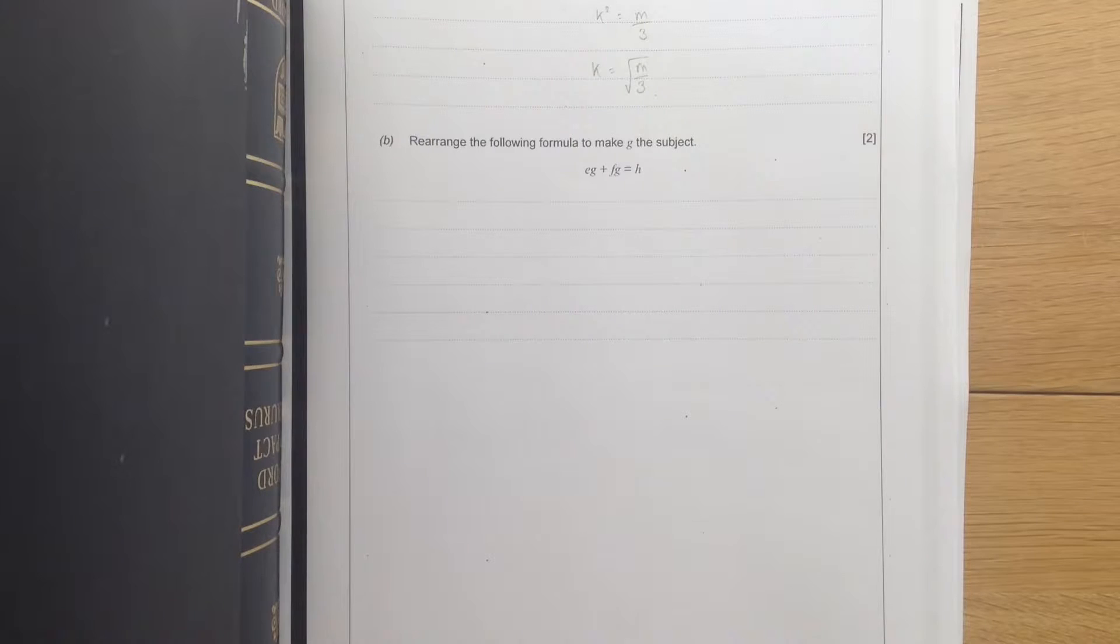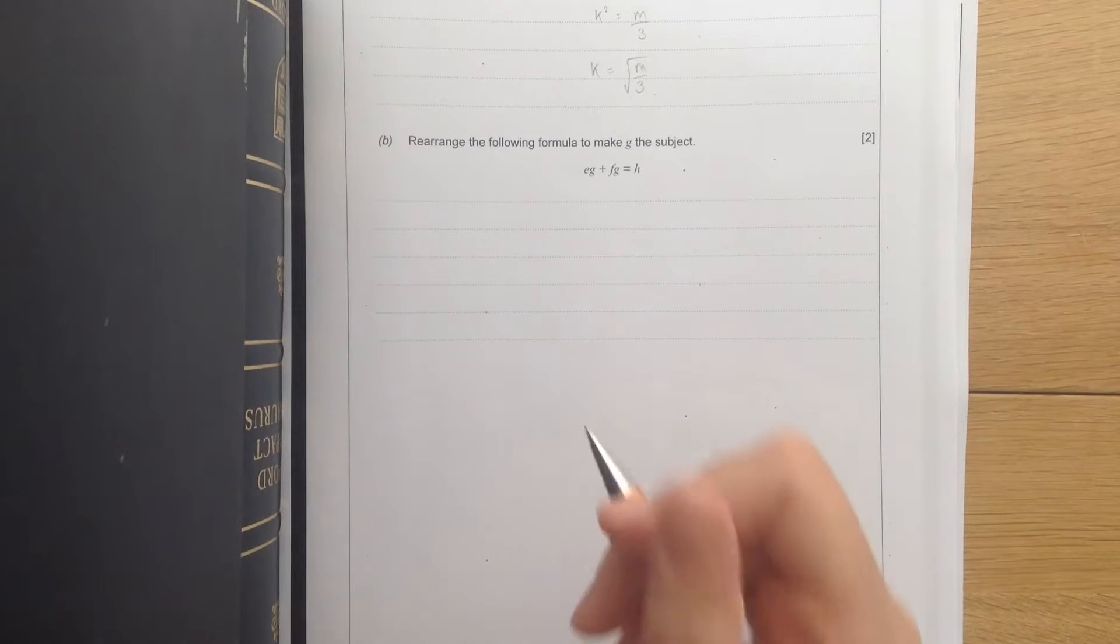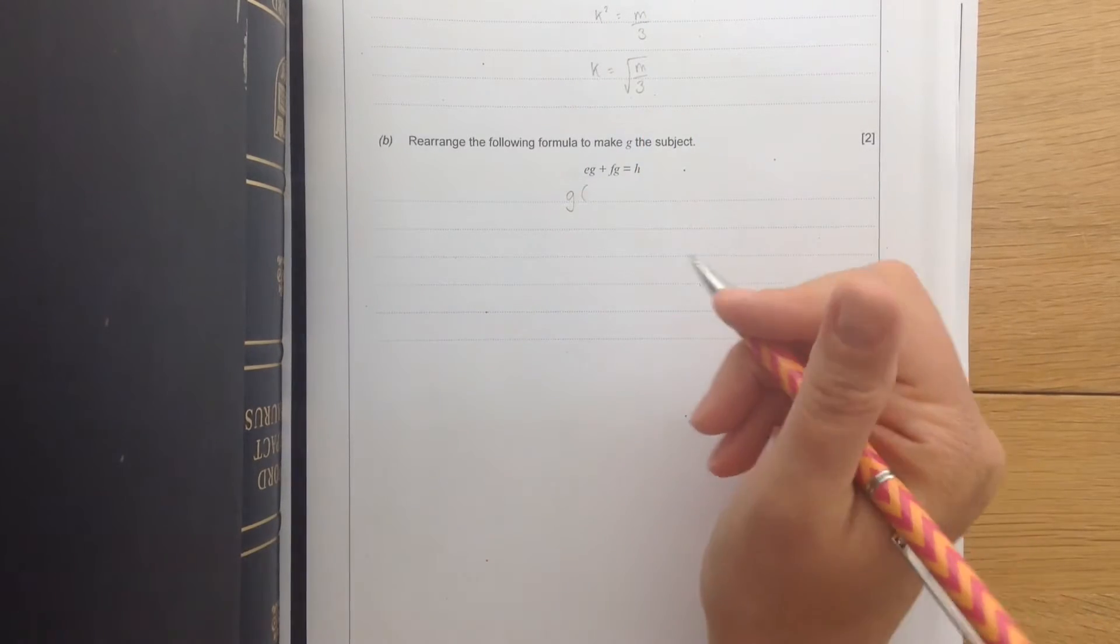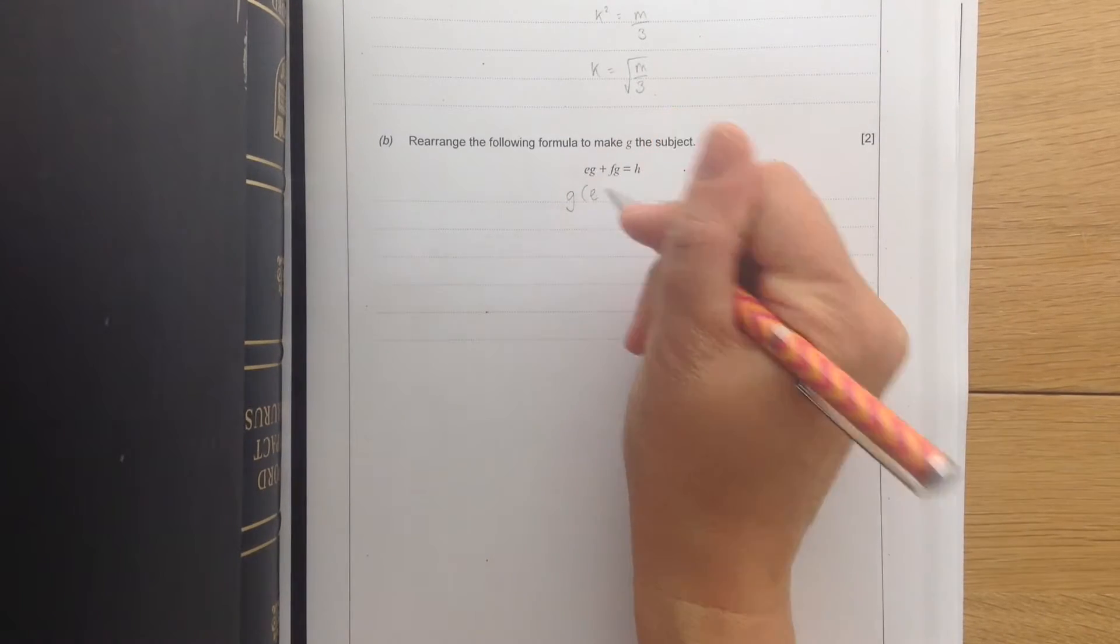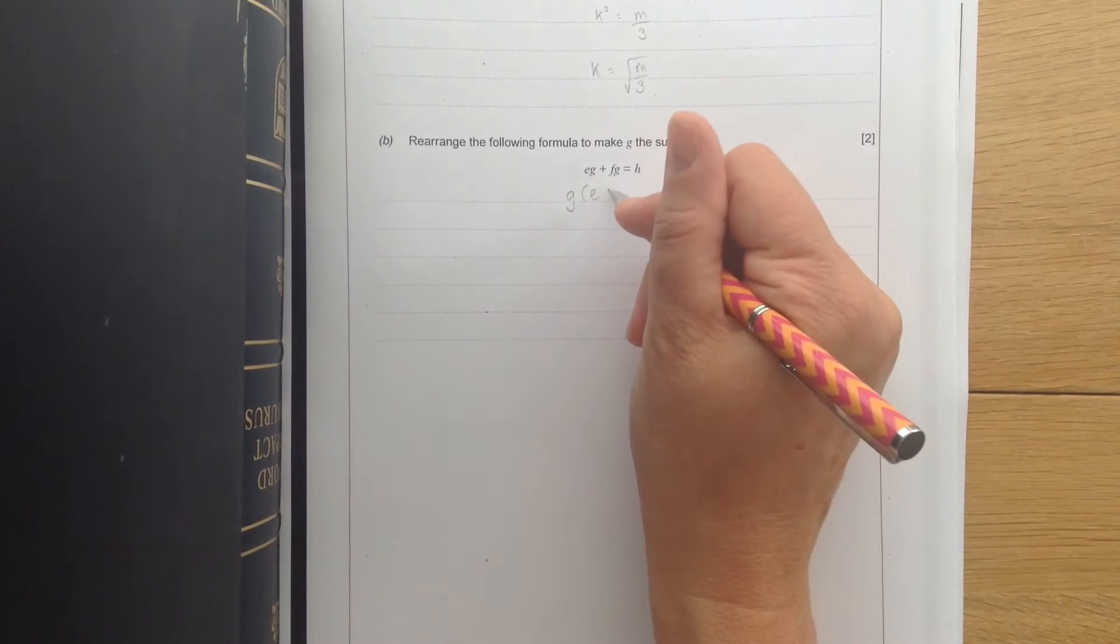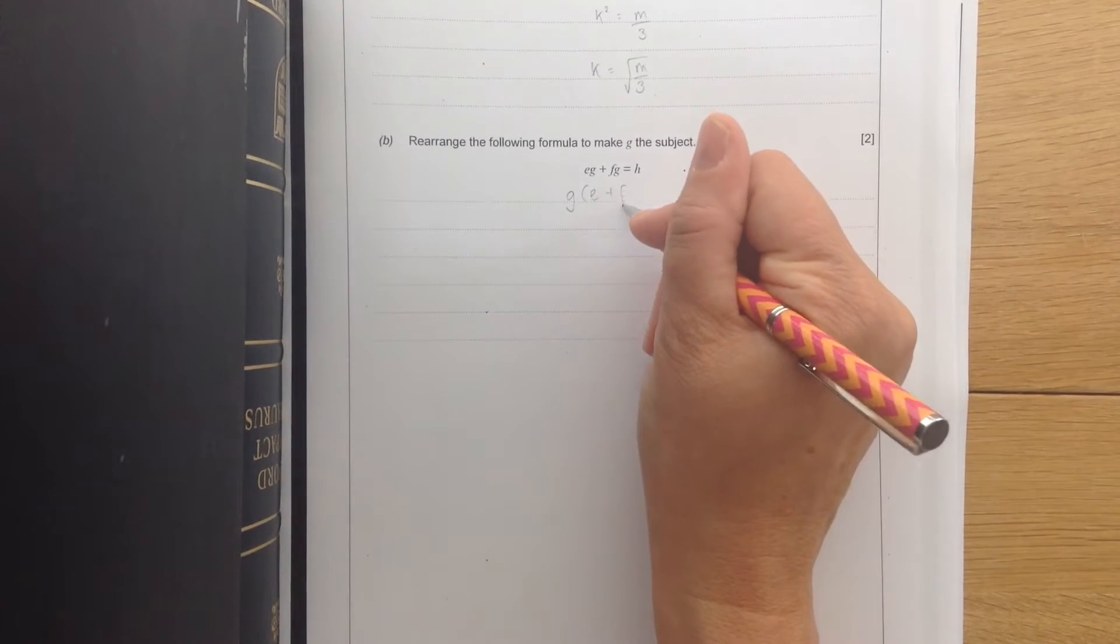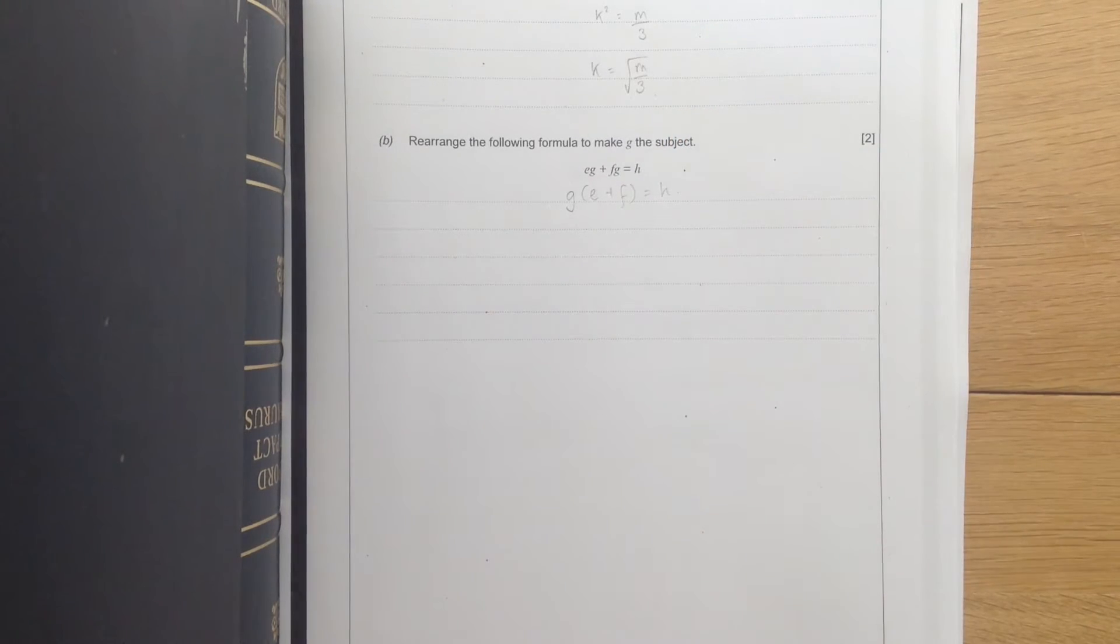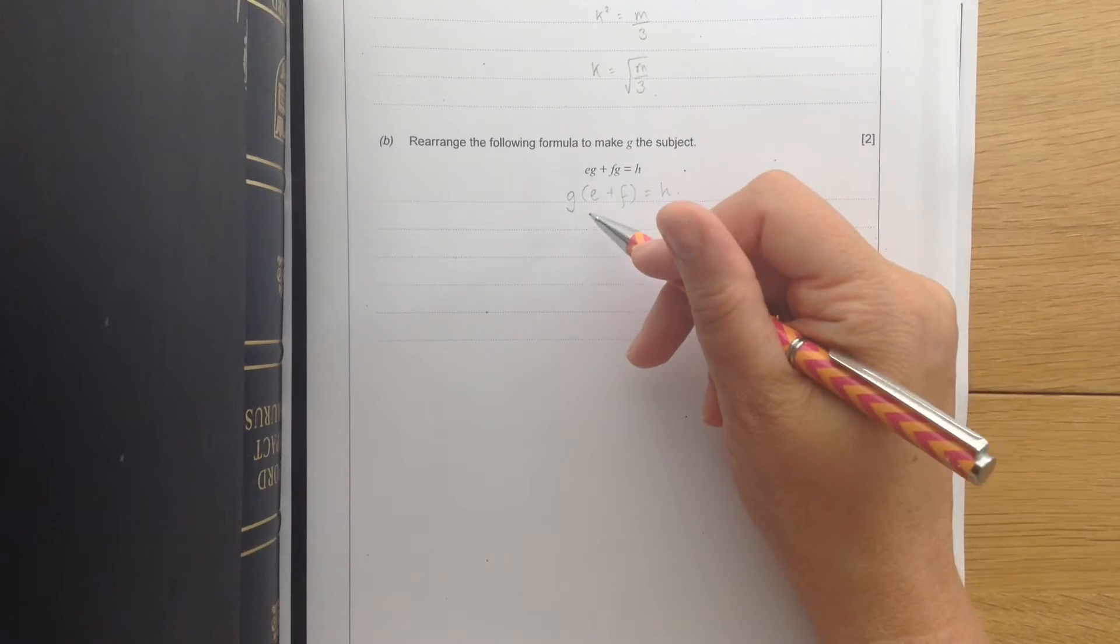So I'm going to use brackets. I'm going to wrap it up using brackets. I'm going to take the g outside. So inside I'm going to have e because g times e will be eg plus f because g times f would be fg equals h. So now I've factorised and taken the g outside.